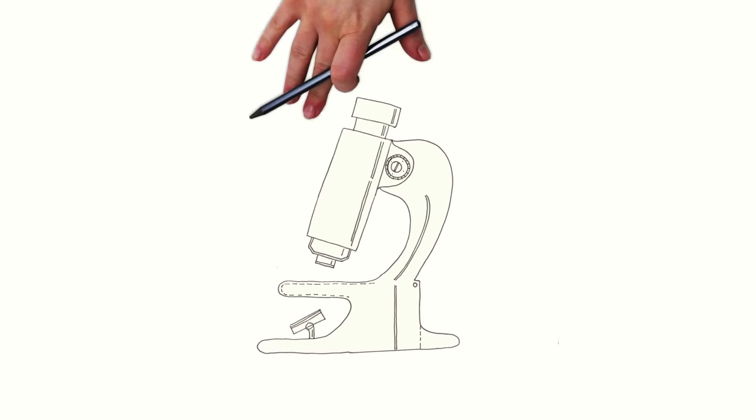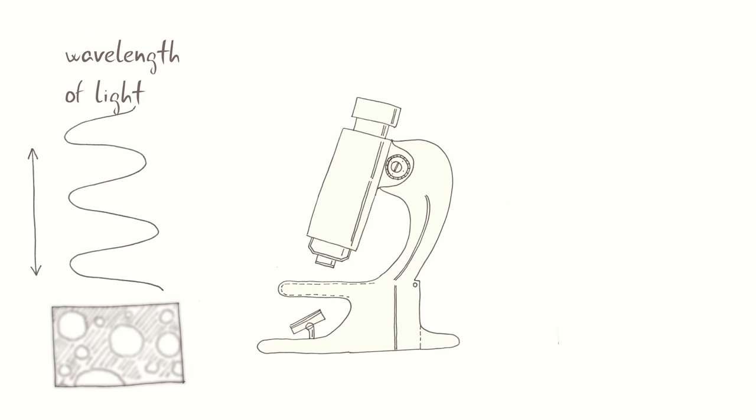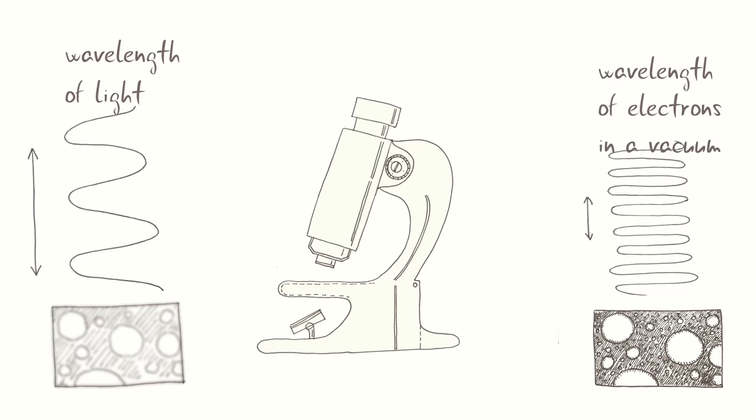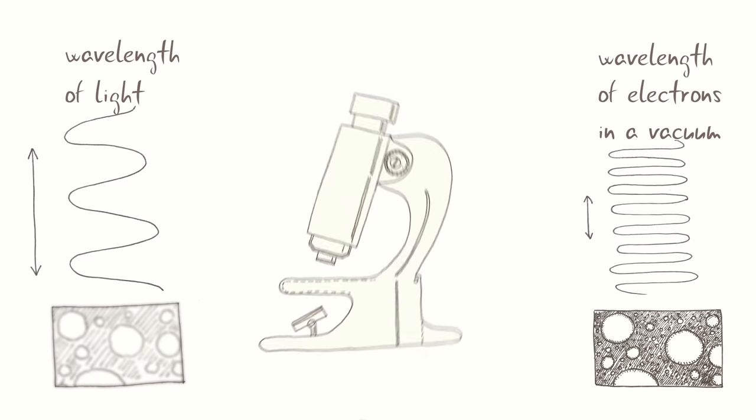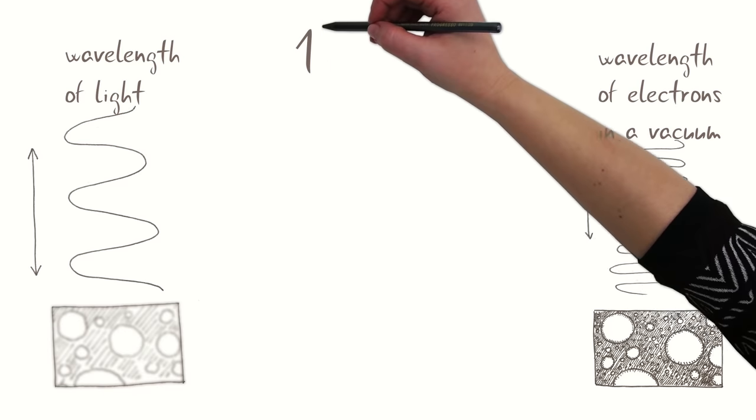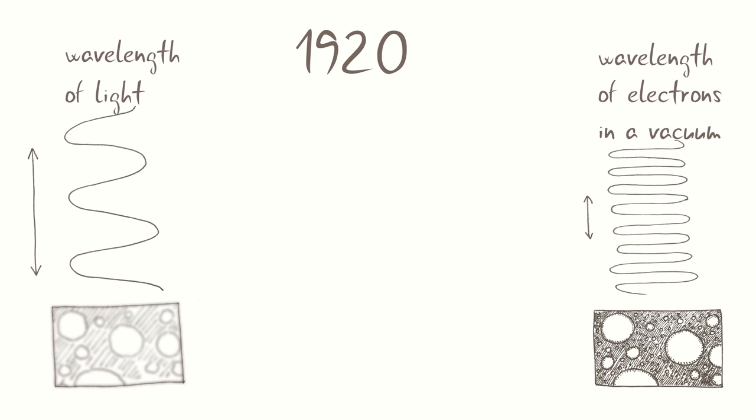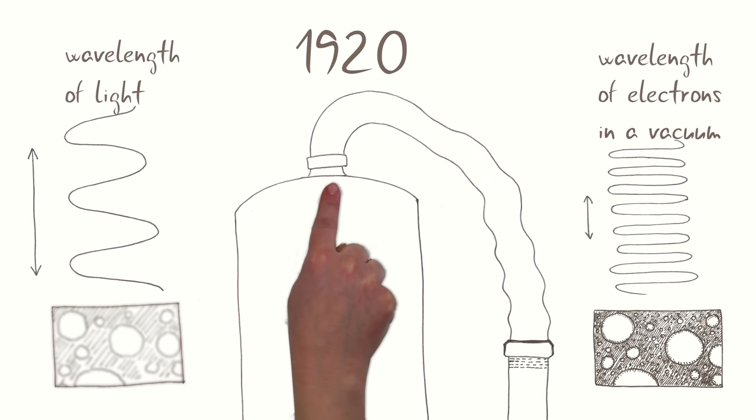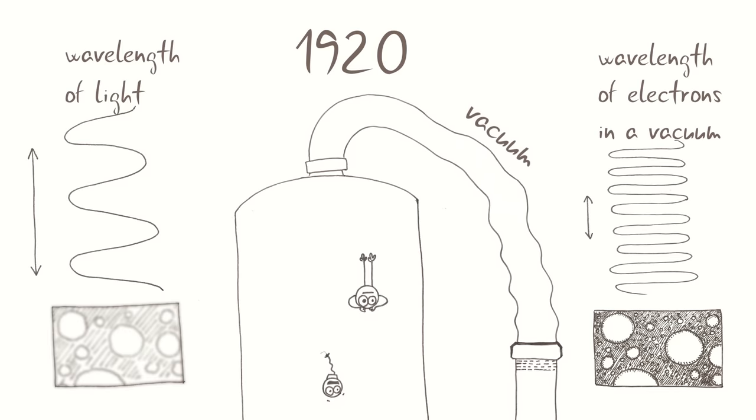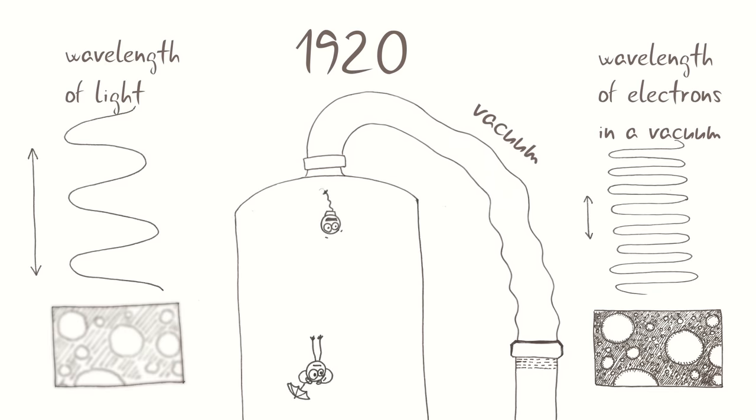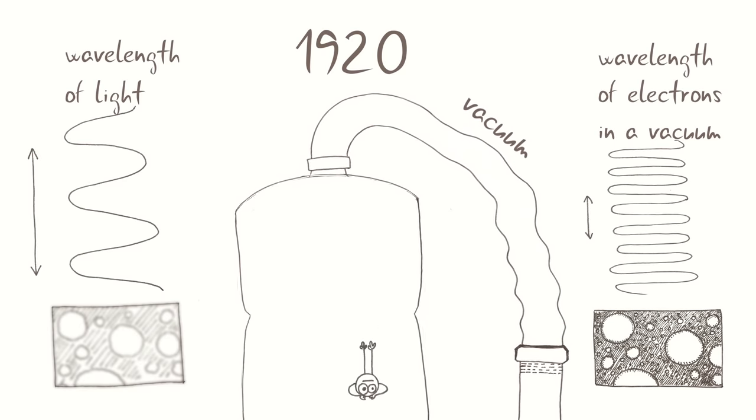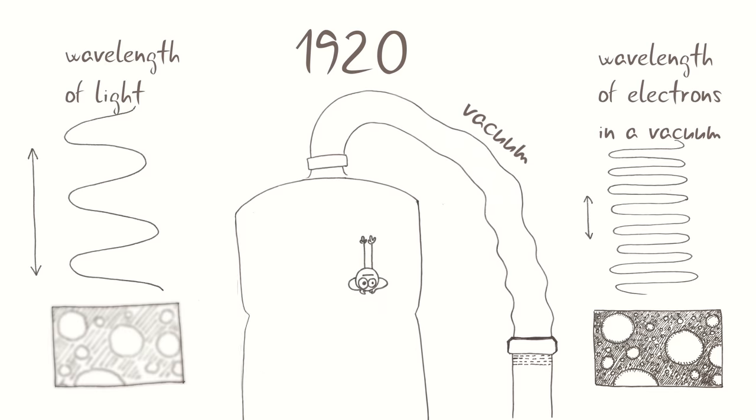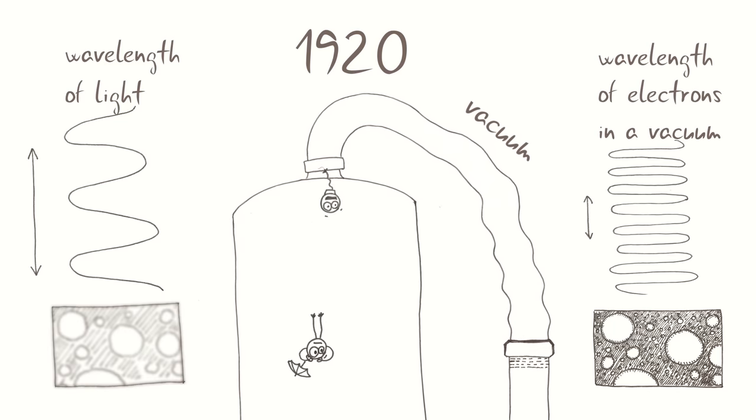Let's go back to the optical microscope. When attempting to reach a better resolution, scientists encountered the limit of the wavelength of the light used for the illumination of the sample. It was not possible to distinguish points closer than several hundreds of nanometers. In 1920, it was discovered that accelerated electrons in a vacuum can act as light, while the wavelength of these electrons is about 100,000 times smaller than light.